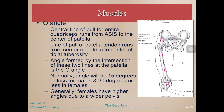On this anterior aspect of the knee we have what's called the Q angle, which is the central line of pull for the entire quadriceps muscle. We can calculate the Q angle by going from the ASIS — the anterior superior iliac spine — down to the patella, forming a vector between those, and then looking at the vector between the tibial tuberosity and the patella. This angle formed there would be the Q angle. It is normally 15 degrees or less for males and 20 degrees or less in females, with females generally having a higher Q angle due to a wider pelvis.